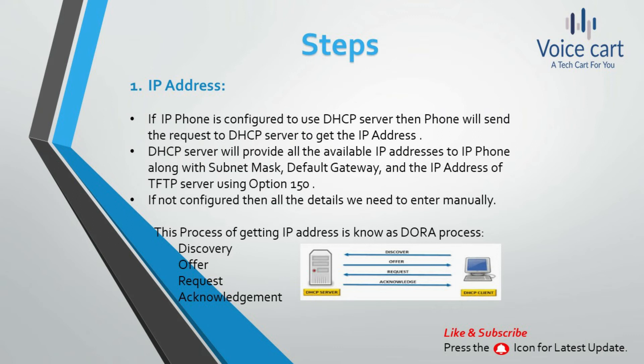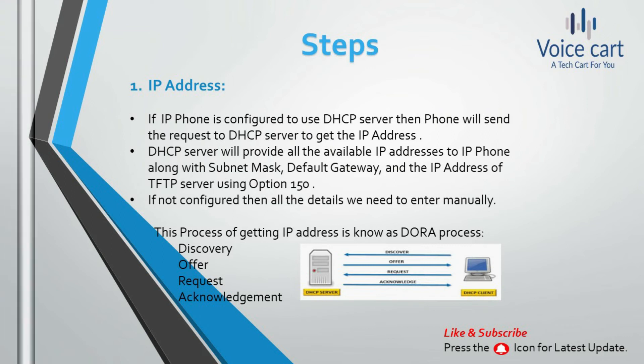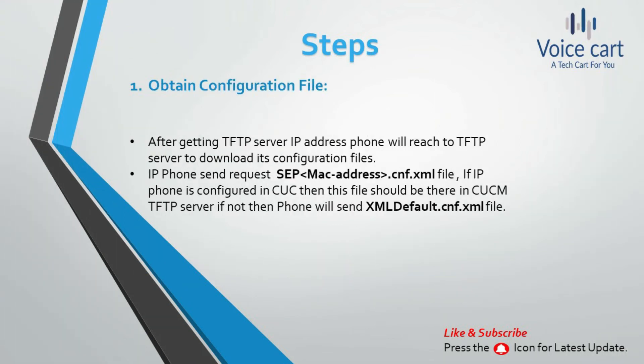If the TFTP server IP is not provided by DHCP, these details must be entered manually. After getting the IP address, the phone starts obtaining its configuration file. The phone reaches the TFTP server to download its config file. It sends a request for the file 'SEP{mac-address}.cnf.xml'. If the phone is configured in CUCM, this file should exist on the CUCM TFTP server; if not, the phone will request 'XMLDefault.cnf.xml' instead.